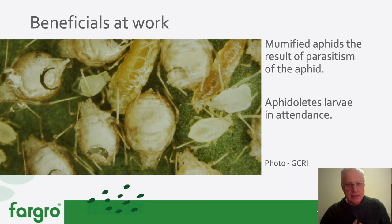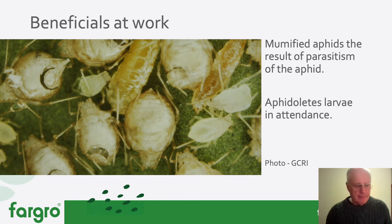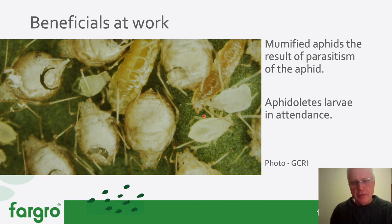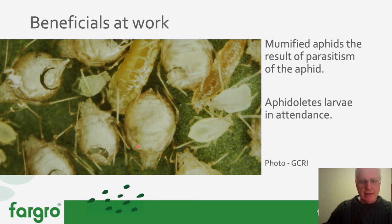One other example is mummified aphids — aphids that have been parasitised by a parasitic wasp as part of biological control. You will see they've swollen up; they're still attached to the leaf via the stylet. There will be an emergence hole cut through by the emerging parasitic larva, which has emerged and will hopefully continue its life cycle and carry on the work. You may still have some live aphids in the colony, and Aphidoletes larvae may also be coming in and feeding on the colony. Look out for these mummified aphids — they are still aphids, but they've been parasitised by biological control.